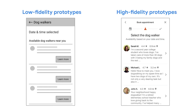Think about this screen of the DogWalker app. On the left, the low-fidelity prototype used lines as placeholders for names. You might also use placeholder text, like first name, last name, or DogWalkerA in a low-fidelity prototype. On the right, the high-fidelity prototype includes actual names and descriptions instead of placeholders. The goal is to have realistic names and profile photos to simulate the real app experience.